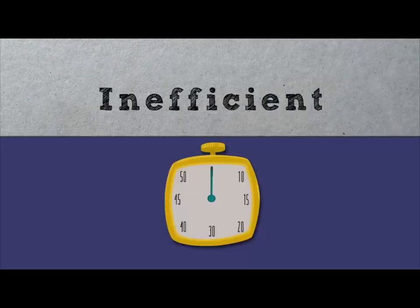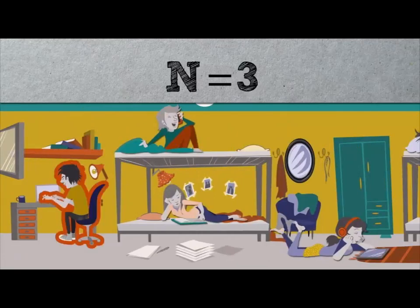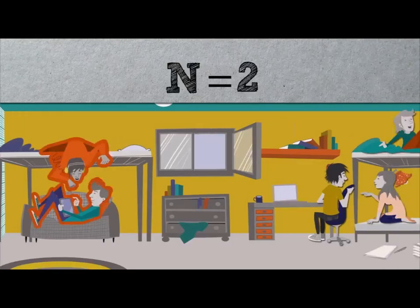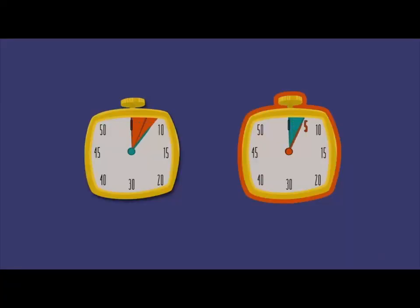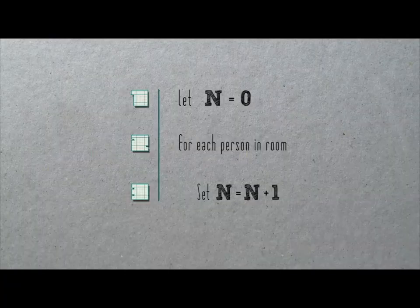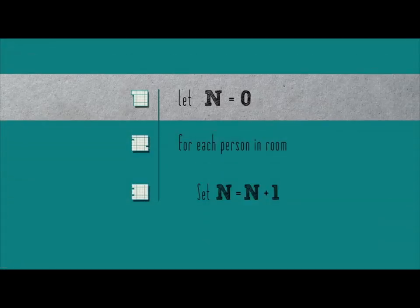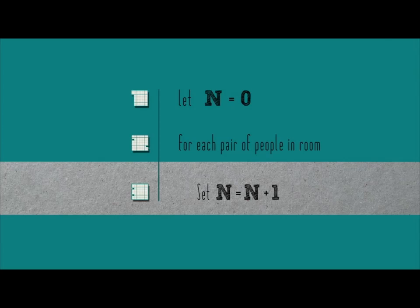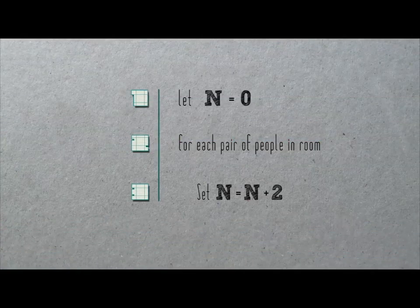But counting people one at a time is pretty inefficient. Surely we can do better — why not count two people at a time? Instead of counting one, two, three, four, five, six, seven, eight, why not count two, four, six, eight? It even sounds faster, and it surely is. Let's express this optimization in pseudocode: let n equal zero; for each pair of people in room, set n equal to n plus two. Rather than count people one at a time, we count them two at a time. This algorithm runs twice as fast as the last.